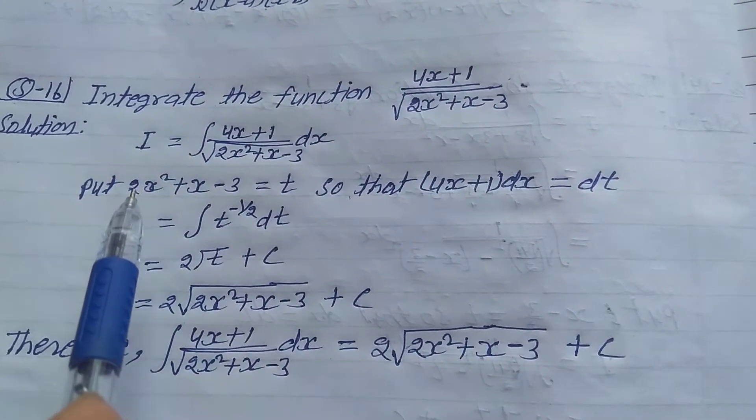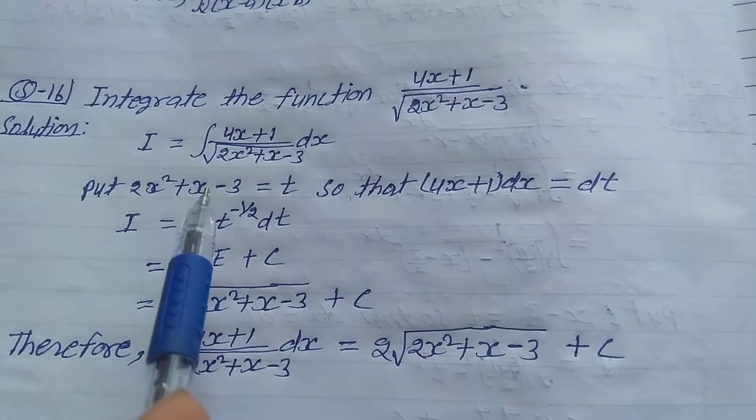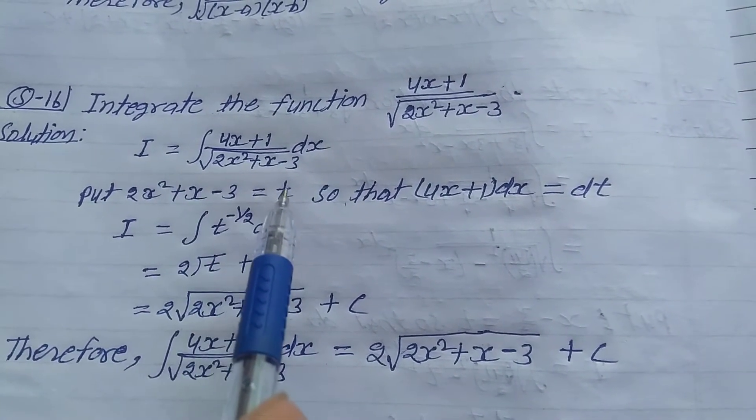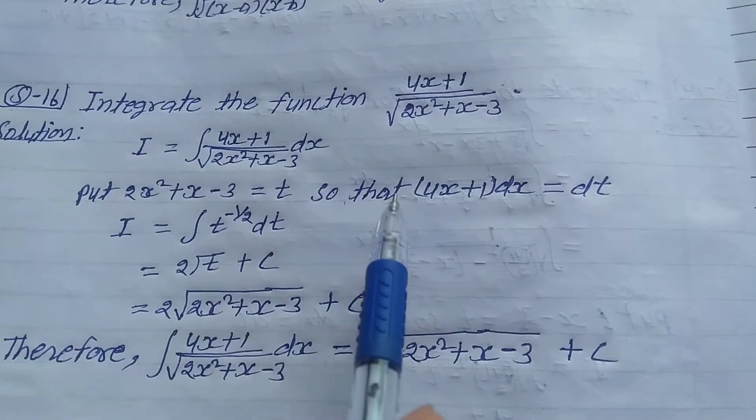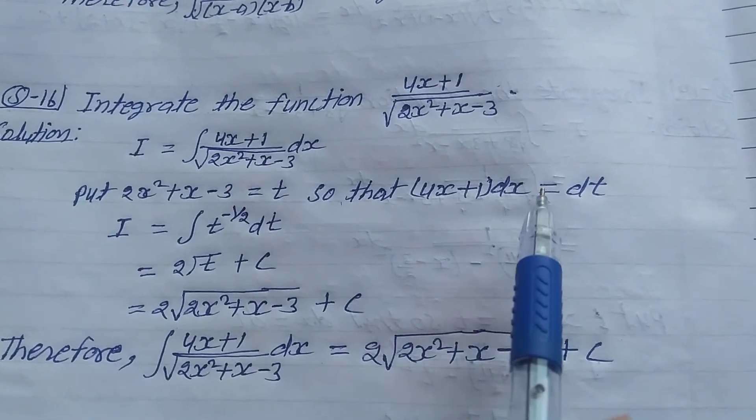So we get 4x, and x differentiated is 1, and -3 differentiated is 0, equals dt/dx. Multiply dx to this side so that (4x + 1)dx equals dt.